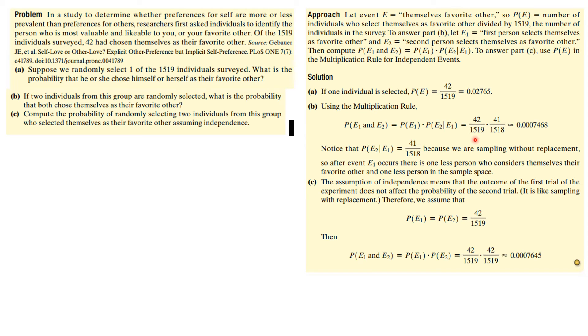But now if we assume independence, we're going to assume that they're both 42 over 1519. And you see this number, even though it's different, is not very different. And this in a sense justifies that rule of thumb that we were talking about.